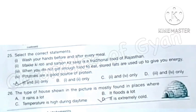Question 25: Select the correct statements. Statement 1: Wash your hands before and after every meal. This is correct statement. Statement 2: Makke ki roti and sarson da saag is the traditional food of Rajasthan. This is incorrect as they are the traditional food of Punjab. Statement 3: When you do not get enough food to eat, stored fats are used up to give you energy. This is correct statement. Statement 4: Potatoes are a good source of protein. This is incorrect as potatoes are good source of carbohydrates. So the correct answer is option A, that is statement 1 and statement 3.